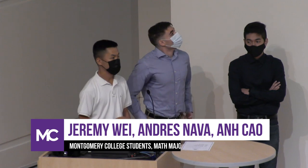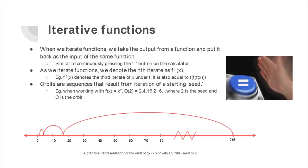In dynamical systems, we study iterative functions. When we talk about iterative functions, we mean taking the output of one function and putting it back in. It's very similar to pressing the equal button on your calculator. We use this notation to denote the iterative, so f of three would be f of f of f of x.